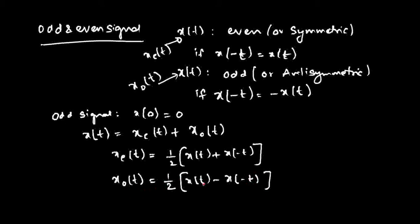From these formulas you can clearly see that for odd functions, X of 0 will be equal to 0 — putting t equal to 0 gives X of 0 minus X of 0, which equals 0. So for odd functions, X of 0 is always equal to 0. In an exam, if asked to find the even or odd part of a signal, use: X_e of t equals half of X of t plus X of minus t, and X_o of t equals half of X of t minus X of minus t.